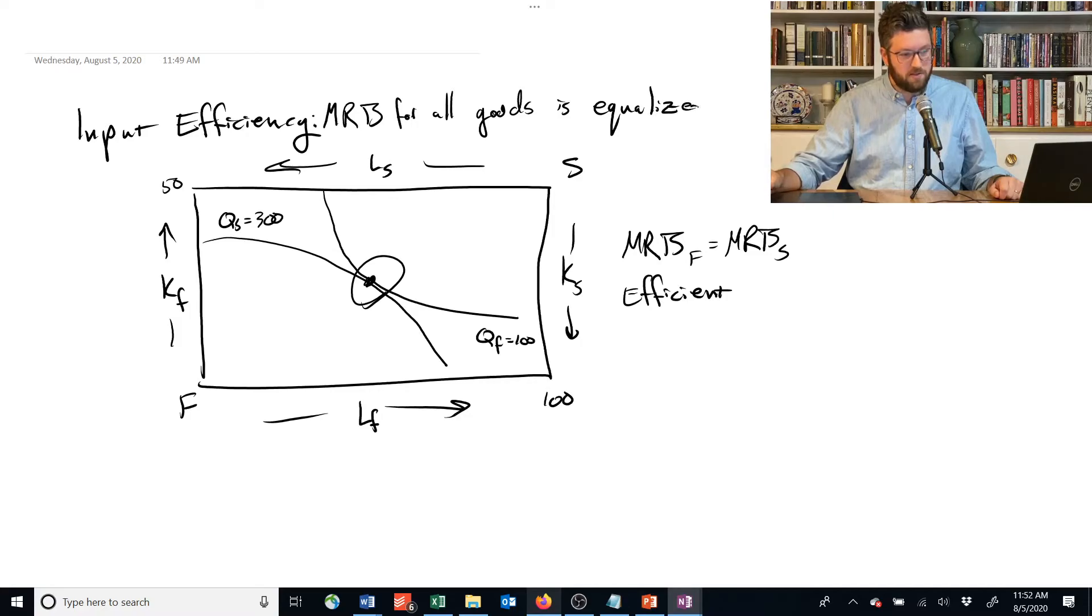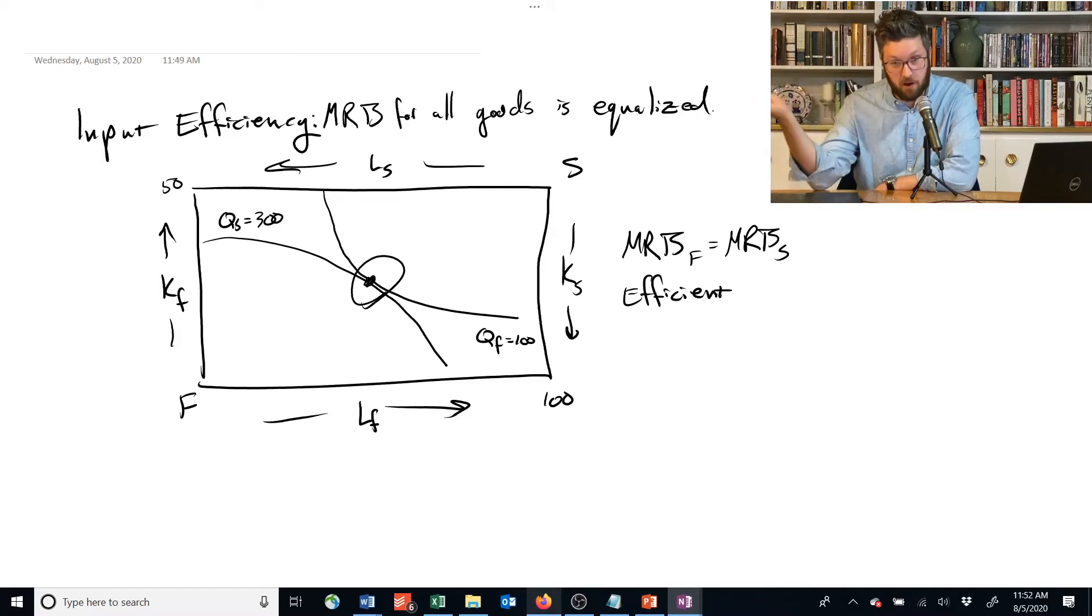So this is a principle that extends far beyond just this toy example that we're doing where there's only food and shelter. If we're producing an economy with millions of different things and labor can be allocated among all these million different goods, capital can be allocated to the production of all these million different goods.